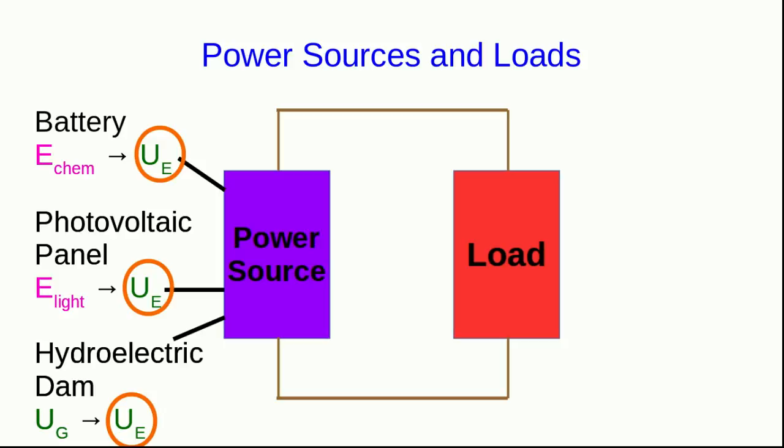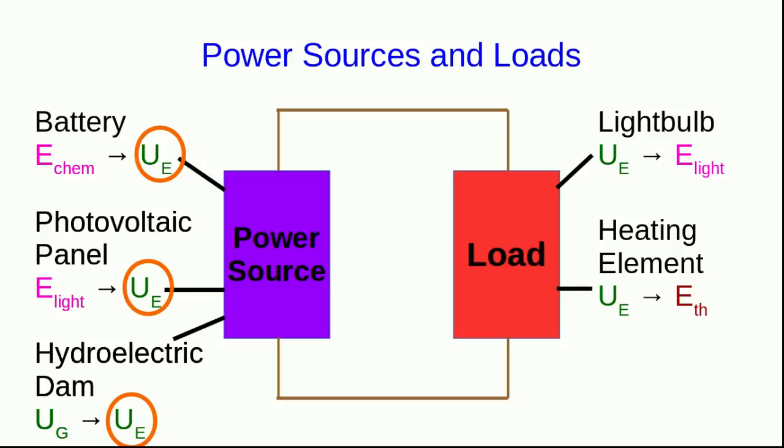Meanwhile, the load can be any number of things. It could be a light bulb converting electric potential energy into energy carried by light. It could be a heating element converting electric potential energy into thermal energy. Or a motor converting electric potential energy into mechanical work being done on some object. But again, the common theme is that they are all converting electric potential energy into some other form of energy.